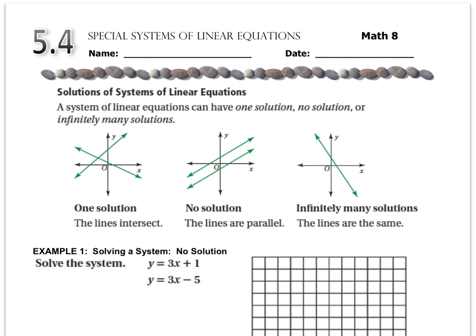The systems that we've graphed so far in Chapter 5 have all had one solution. So if we were to graph them, they would intersect at one specific point. But in this lesson, we look at what systems look like when there's no solution, meaning if we were to graph them, they would be parallel, or if there's an infinite number of solutions where they would end up being the exact same line.